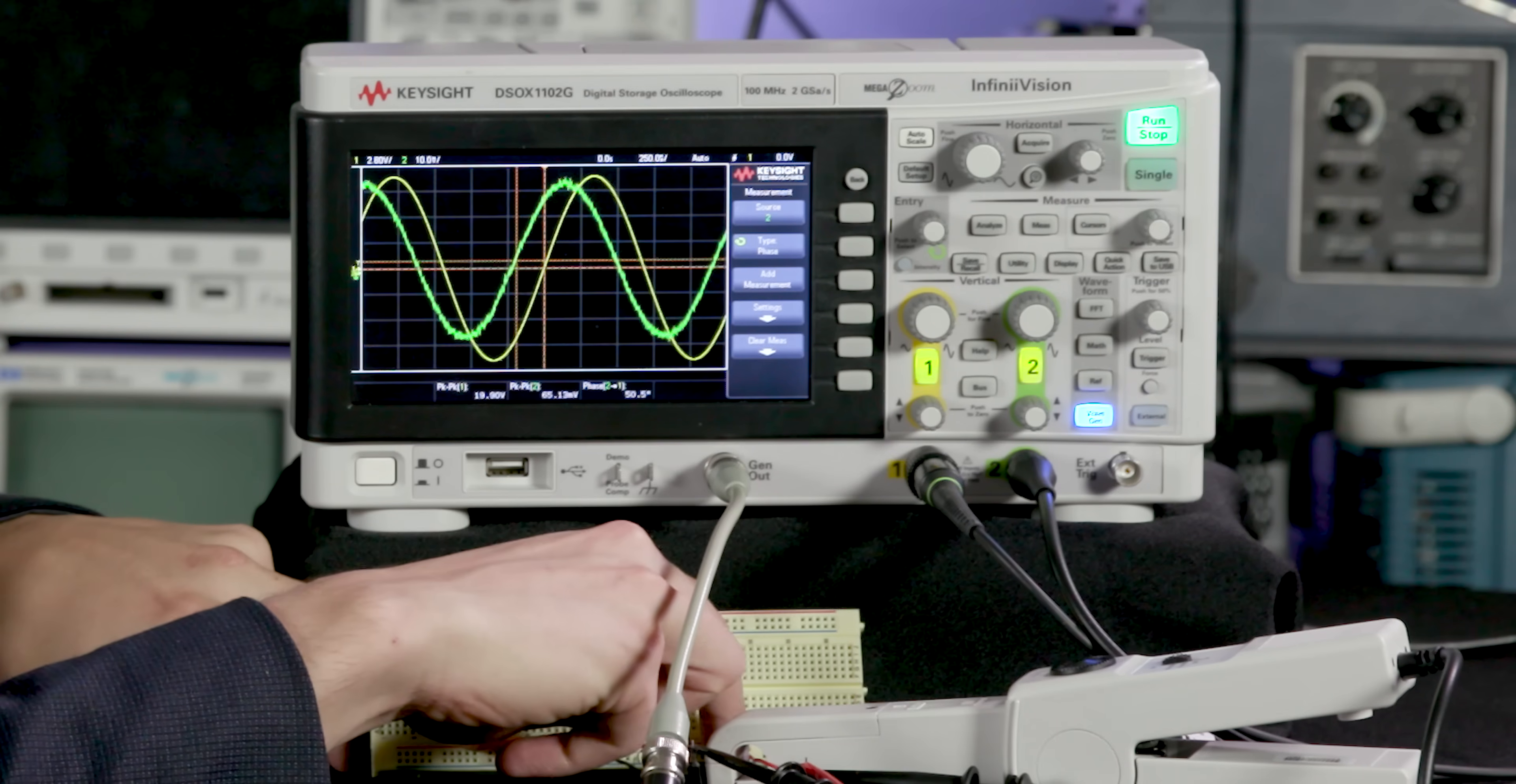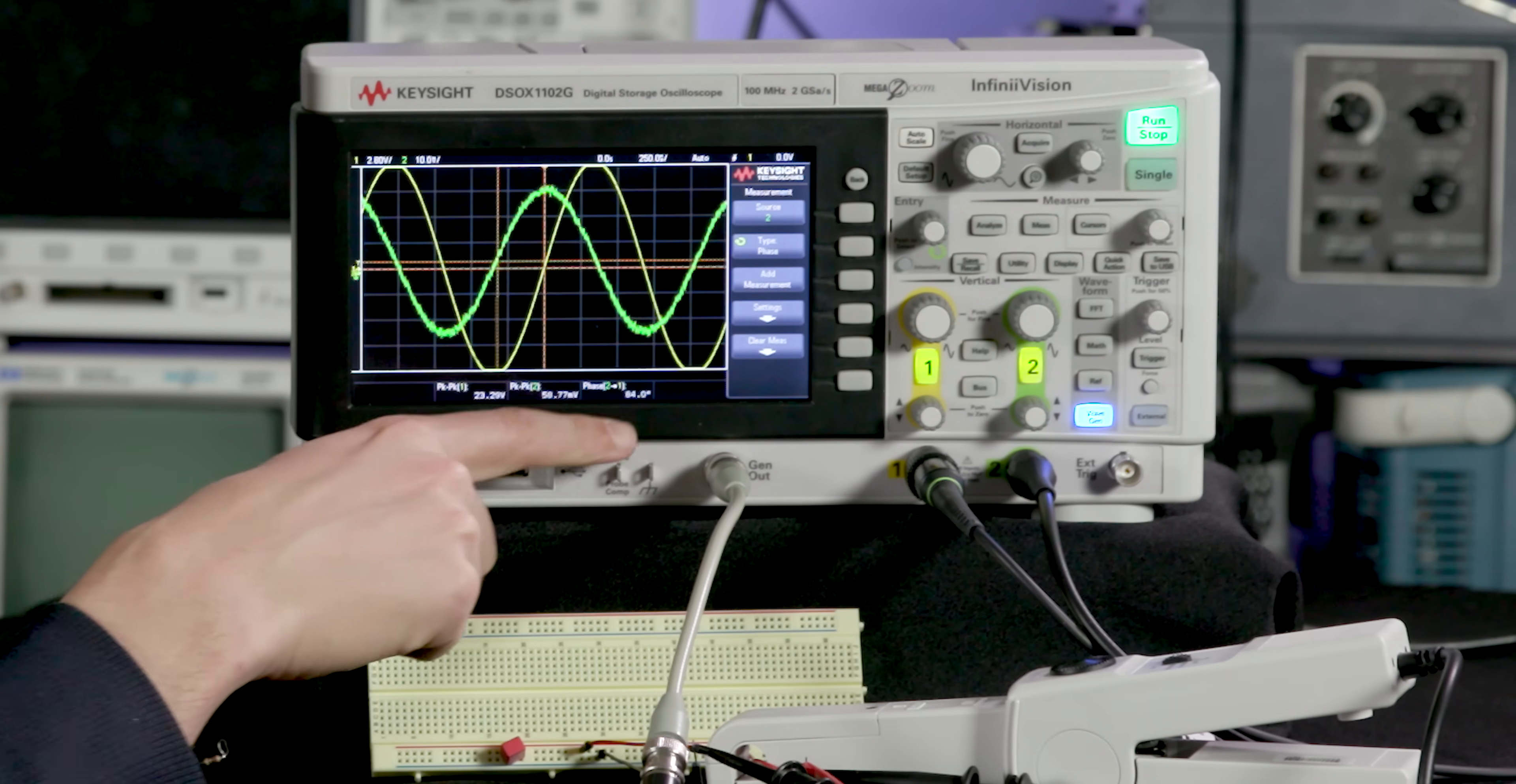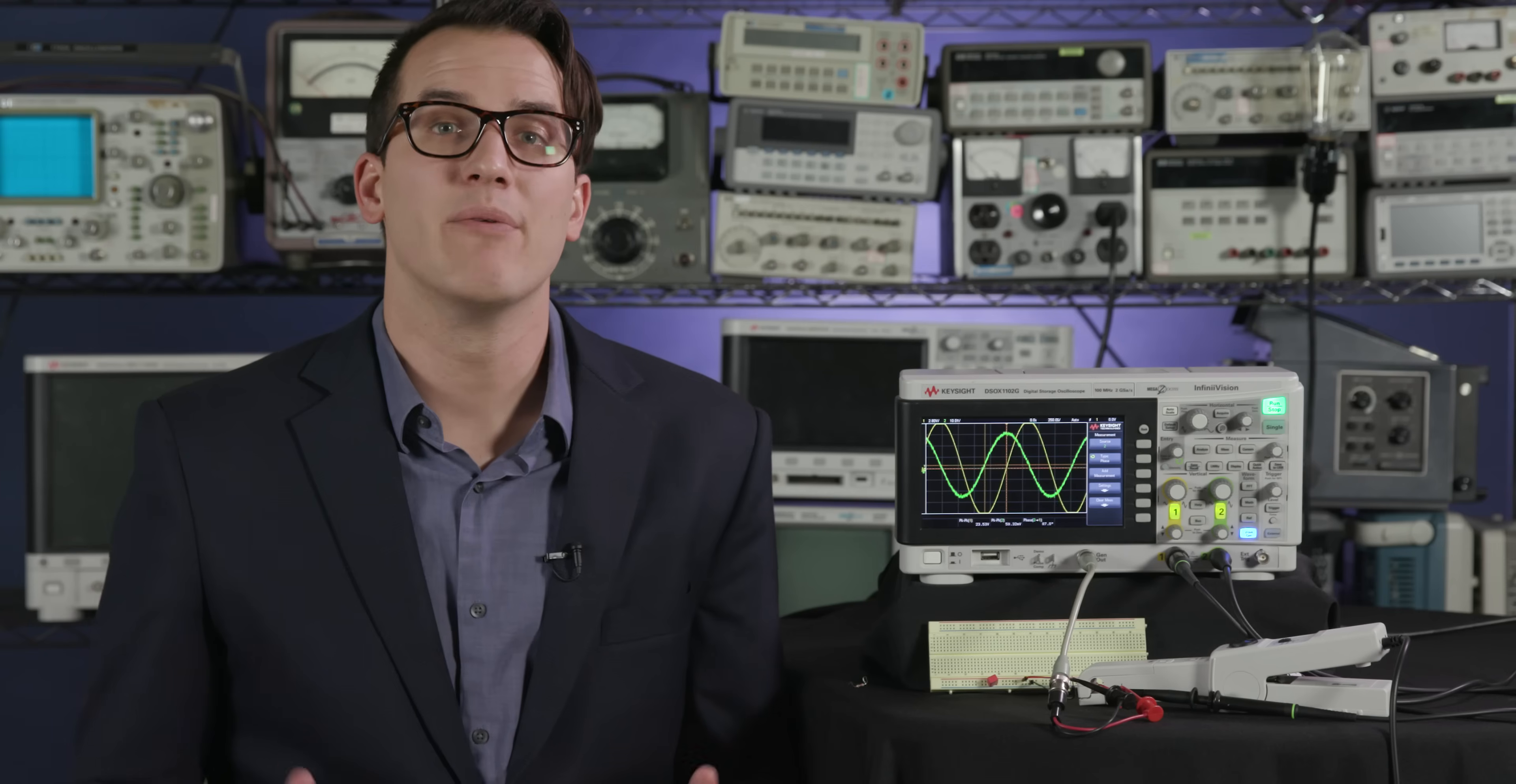If I pull my resistor out I should get to see about a 90 degree phase shift from my capacitance. And we do see a roughly 90 degree phase shift between voltage and current when I have just a capacitor.